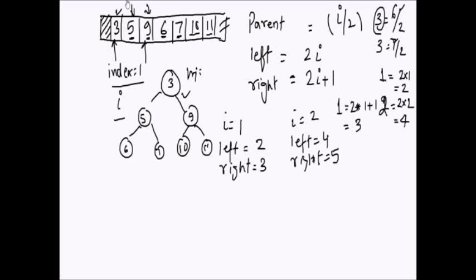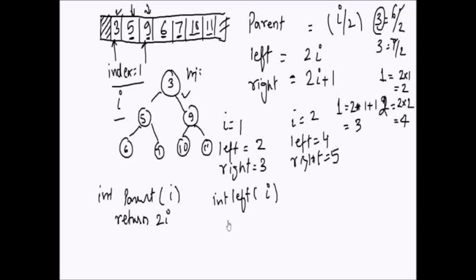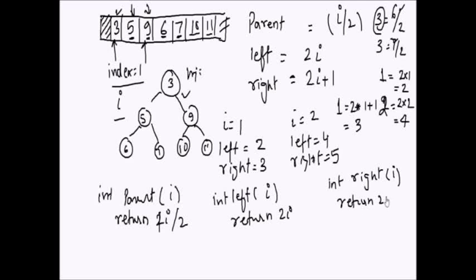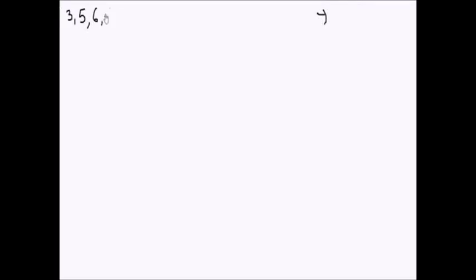This heap is represented in an array. Now let's see how we can insert an element in a heap. We will use three helper functions: parent(i) returning i/2, left(i) returning 2i, and right(i) returning 2i+1. When inserting, if the heap is null, we just input the first element. For subsequent elements, we put them in the first available slot and check the min heap property.